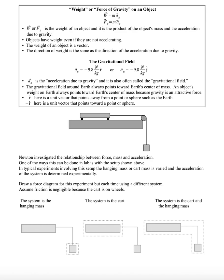One of the ways this can be done in a lab is with the setup shown above. In typical experiments there will be a hanging mass and a cart, and the mass on each of these objects can be varied.